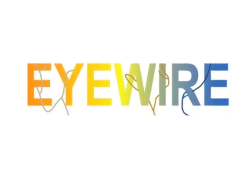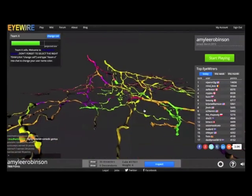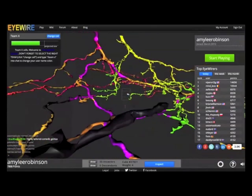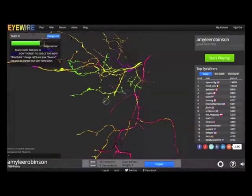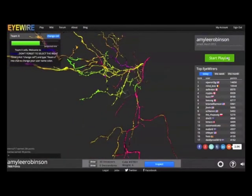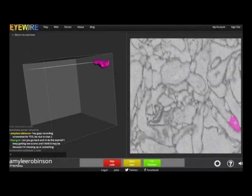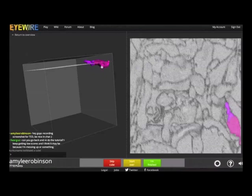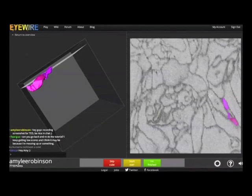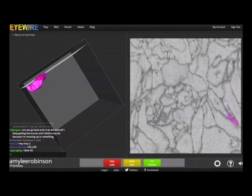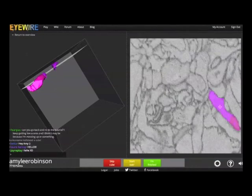iWire is a game that was developed in Sebastian Sung's Computational Neuroscience Lab at MIT in 2012, where anybody, anywhere, can help discover the circuitry in the retina. The game is known as a citizen science game because it allows the general public to contribute to the cutting-edge research task of mapping the brain. So, how exactly does iWire work?